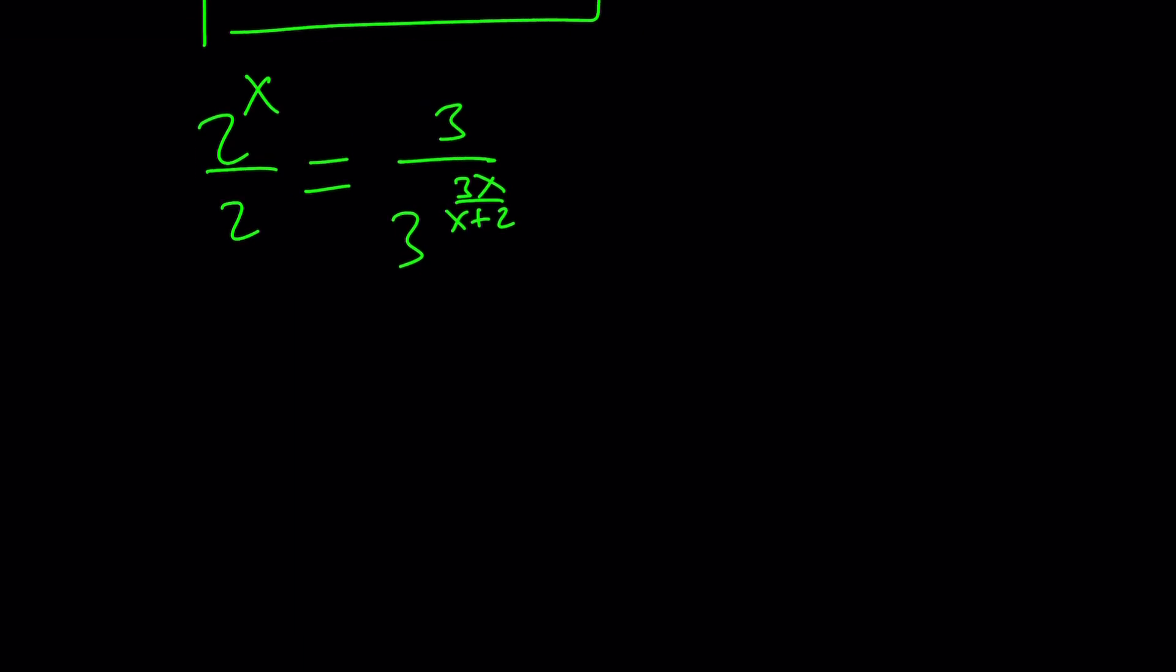Division means these are first powers, first of all. And division means you're going to subtract the exponents, right? So this is going to turn into 2^(x-1). And this one is going to turn into 3^(1 - 3x/(x+2)). Be careful about the order because in subtraction, order matters. It's not commutative. So can we simplify this a little bit more? We should be able to, right?